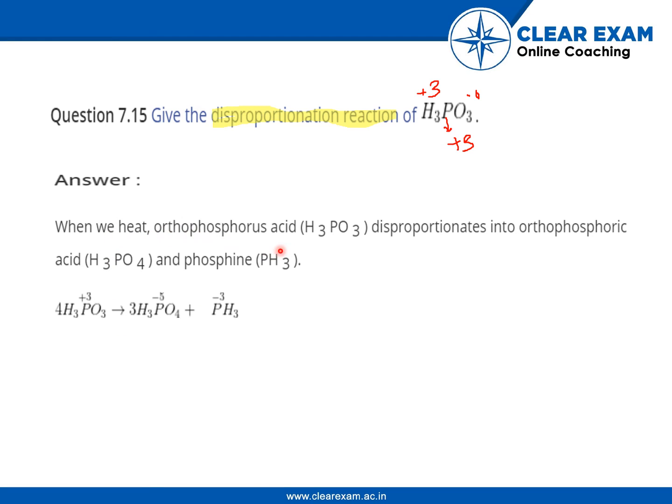When we heat orthophosphorus acid H3PO3, it disproportionates into orthophosphoric acid H3PO4 and phosphine PH3.